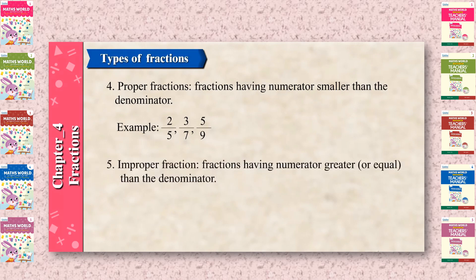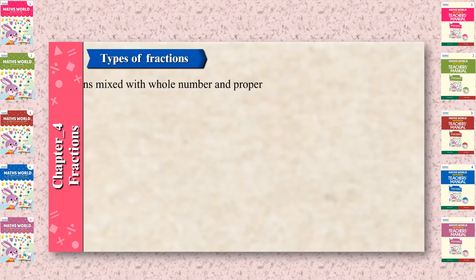Improper fractions: fractions having a numerator greater than or equal to the denominator. Example: 4 upon 3, 5 upon 4, 9 upon 5.